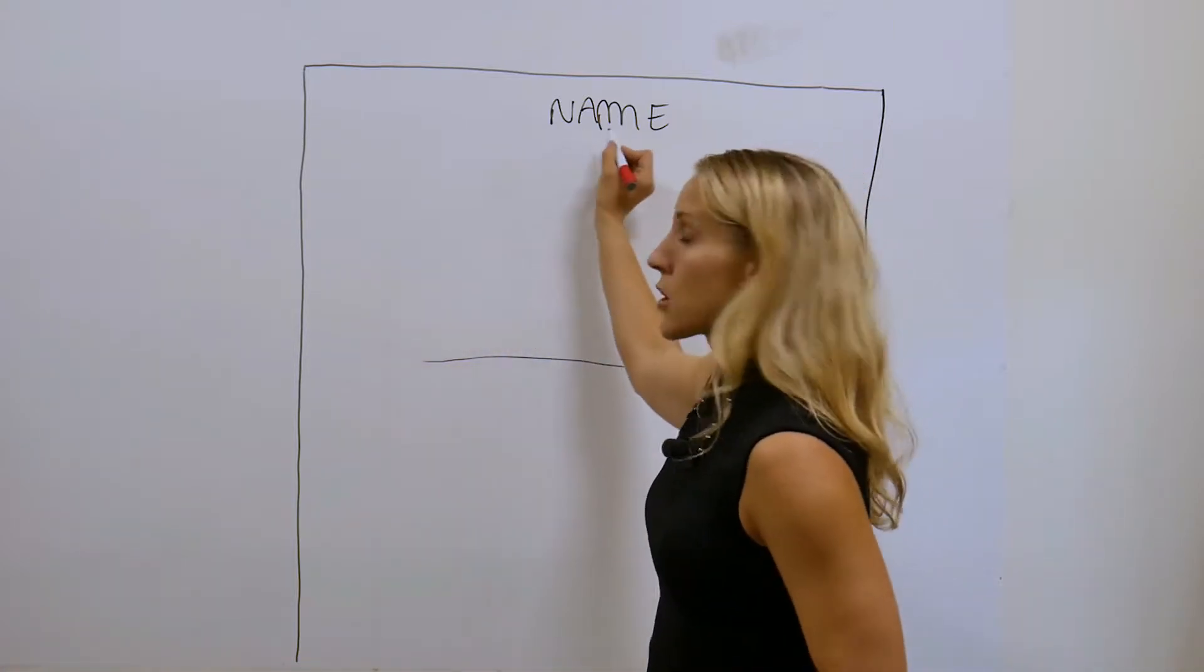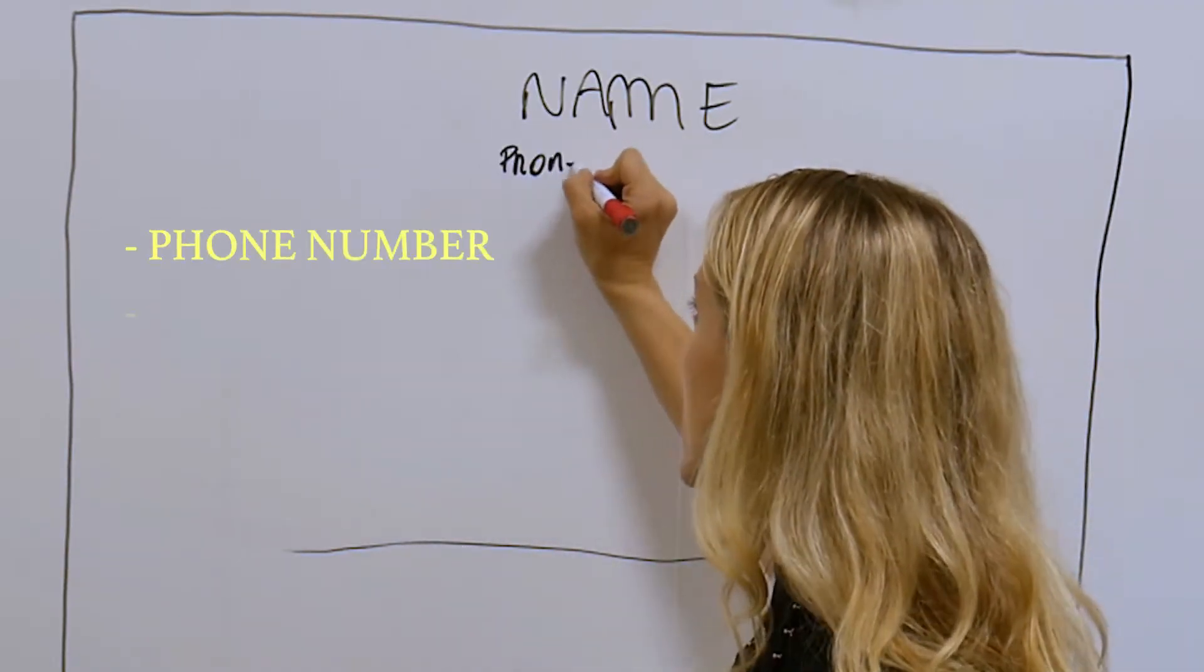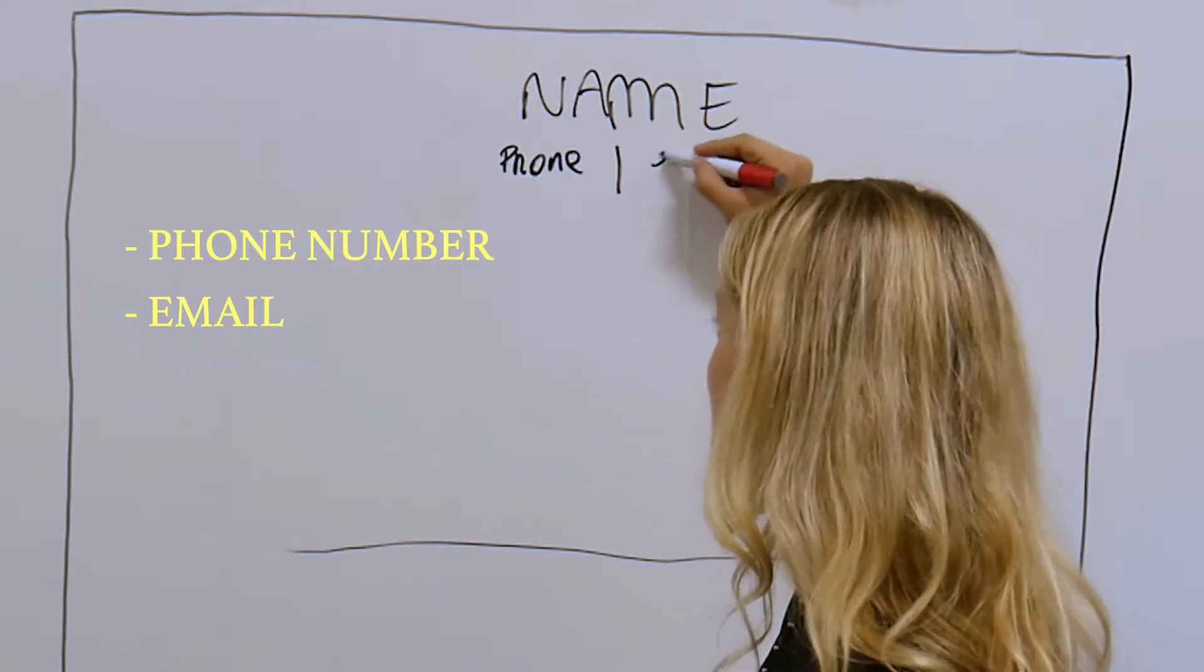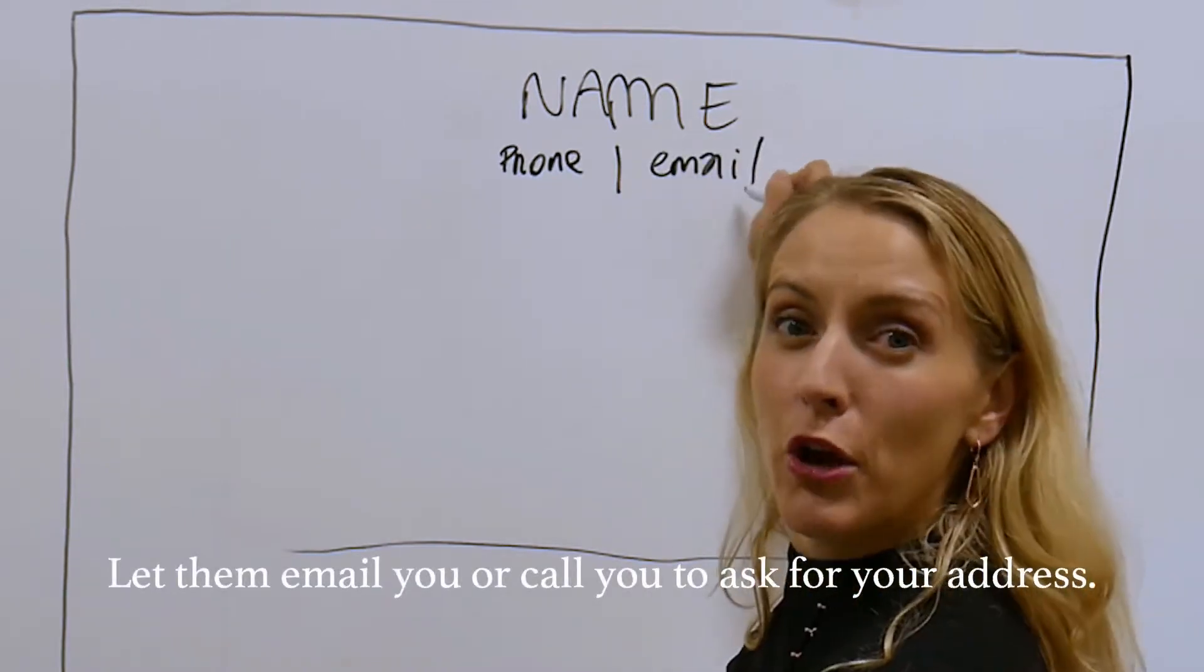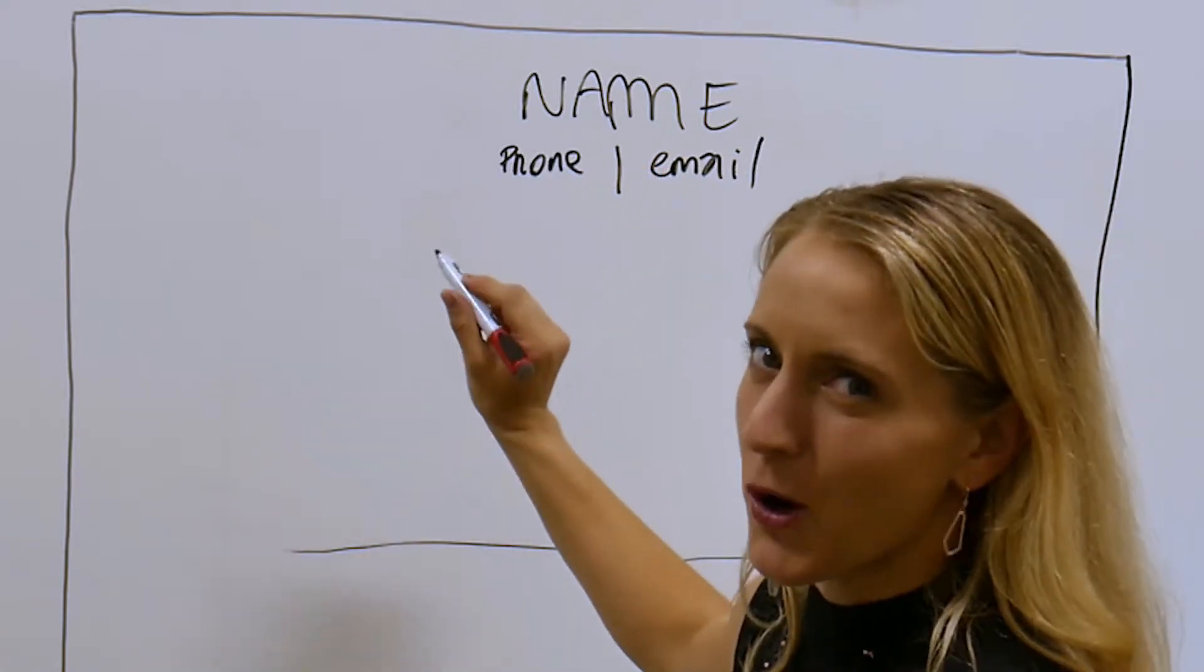Information that goes below your name: your phone number, make a little line there, and your email. If they want your address, they can either email you or call you to ask for it.